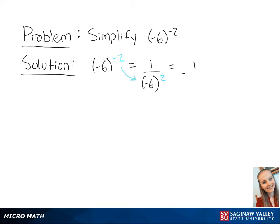This is going to equal 1 over negative 6 times negative 6. This is because negative 6 squared is equal to negative 6 multiplied by itself 2 times.